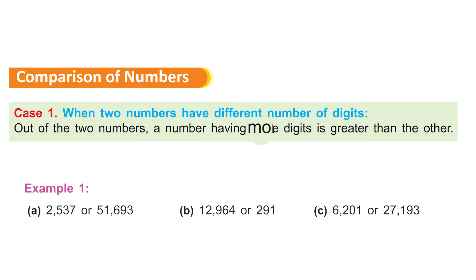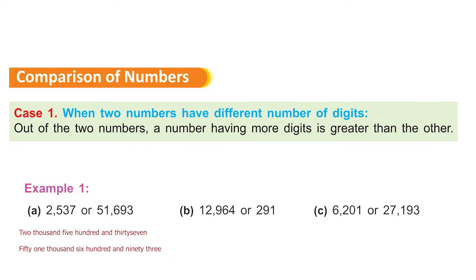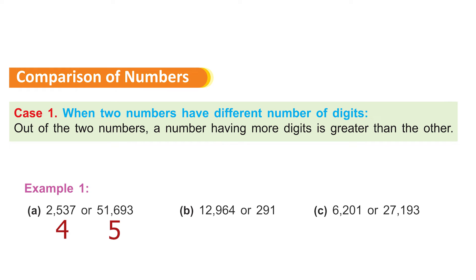Comparison of numbers: when two numbers have a different number of digits, the number with more digits is greater. Example: 2,537 or 51,693. The first number has four digits and the second has five digits, so the second number is greater — the one with five digits is greater.